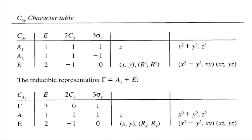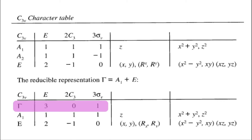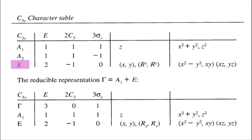Taking ammonia as an example in the C3v point group: there are six operations and three irreducible representations — A1, A2, and E. The reducible representation obtained for ammonia using the bond vector method is (3, 3, 0, 1). Applying the reduction formula, we find A1 occurs once, A2 occurs zero times, and E occurs once.